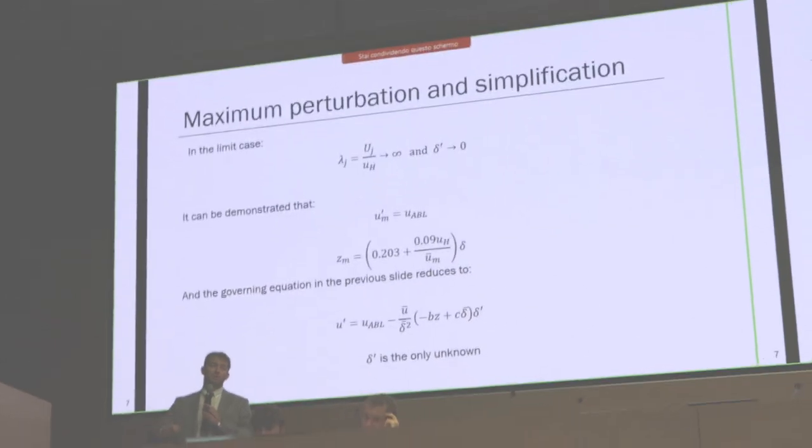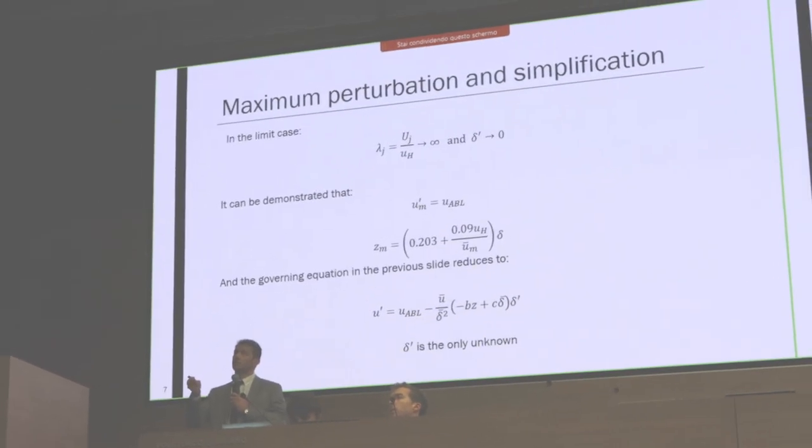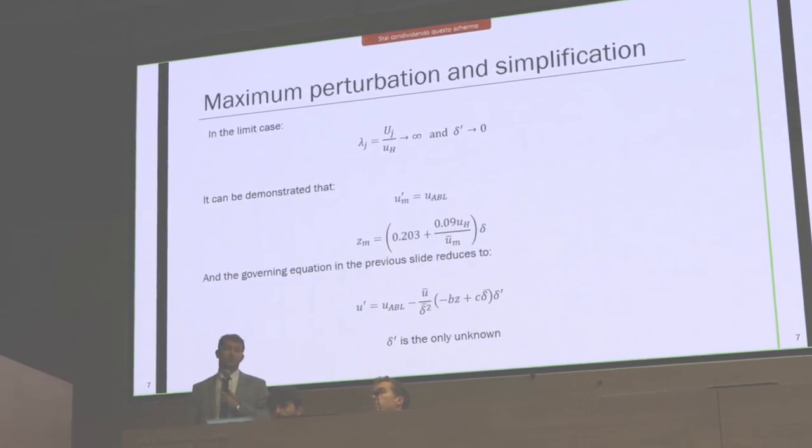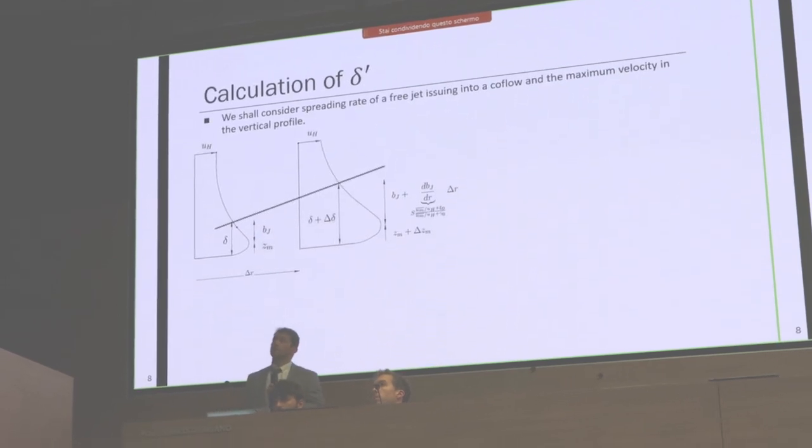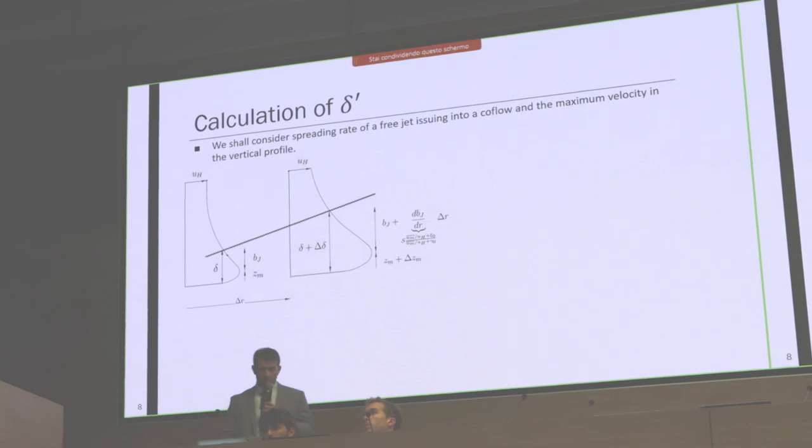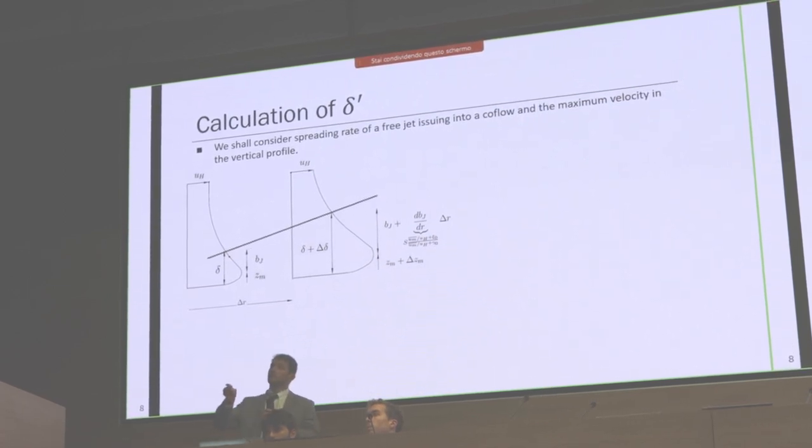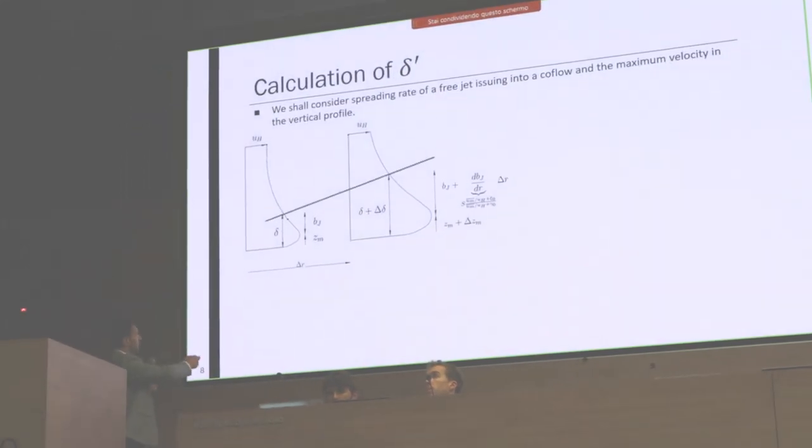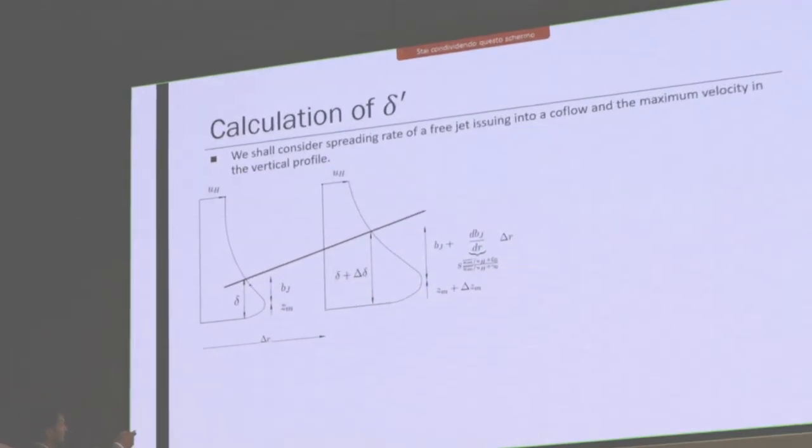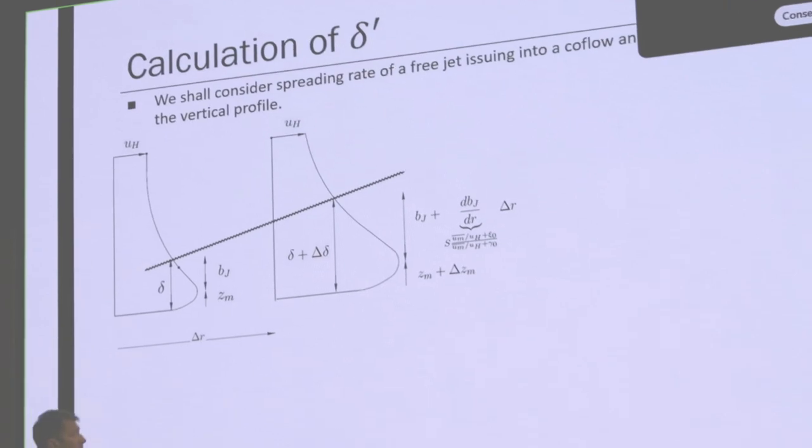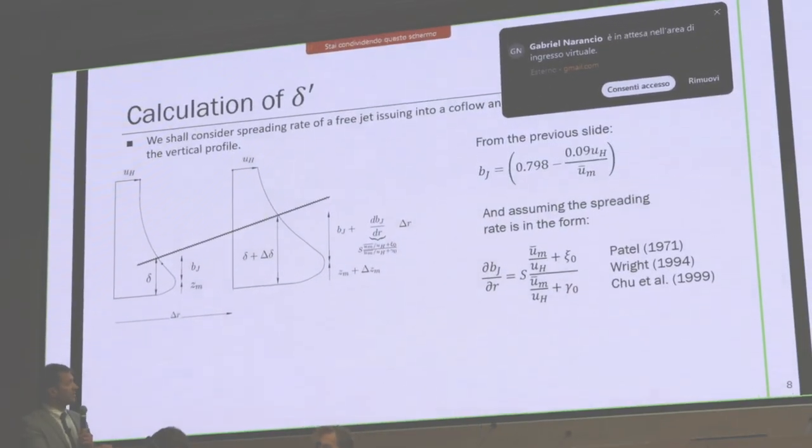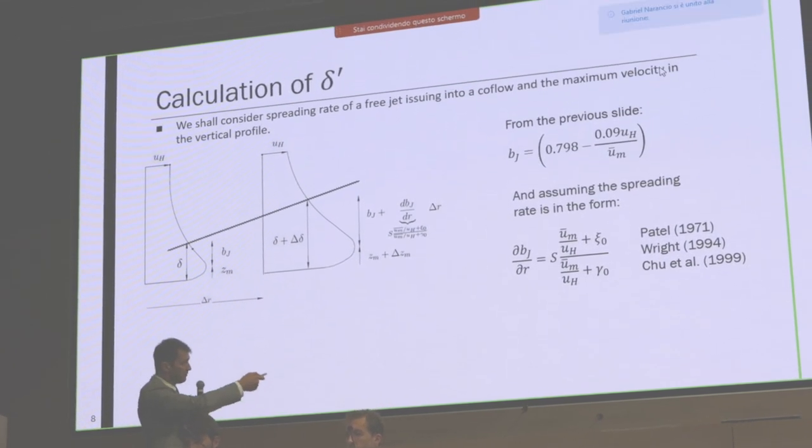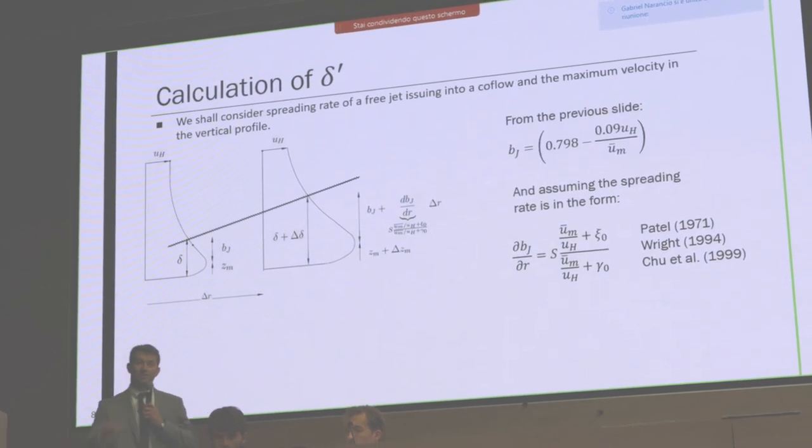With these two results, the equation from the previous slide reduces to this simpler equation, but we still don't know delta prime, which is perturbation of the half height by ABL winds. To find that, we use jets issuing into coflow and the spreading rate of these jets. The jet is issuing from left to right with this spreading and BJ, which is delta minus ZM. From literature we know the spreading rate in impinging jet from these papers and many others. We can use this relationship to supplement our model, but unfortunately S, C0, and gamma0 are unknown.